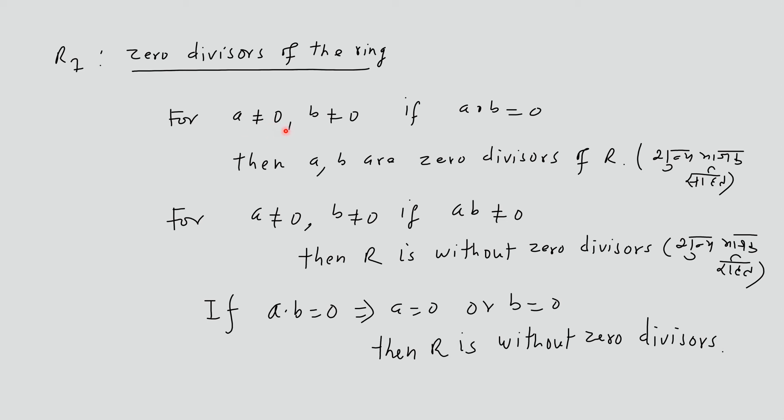That is, if a ≠ 0 and b ≠ 0, and a·b = 0, then a and b are zero divisors. Otherwise, R is without zero divisors.